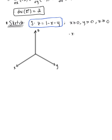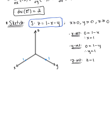We need to find the intercepts using the given surface so we can see the tetrahedron. For the x-intercept, set y and z to 0: we get 0 equals 1 minus x, so x equals 1. For the y-intercept, set x and z to 0: we get 0 equals 1 minus y, so y equals 1. For the z-intercept, set x and y to 0: we get z equals 1. So all three intercepts are at 1.